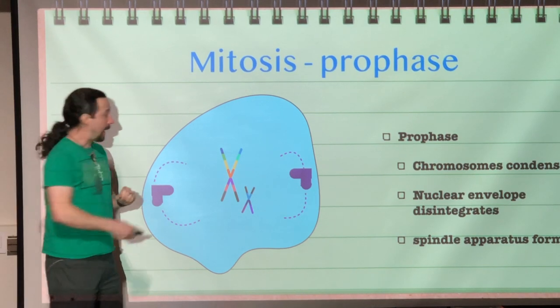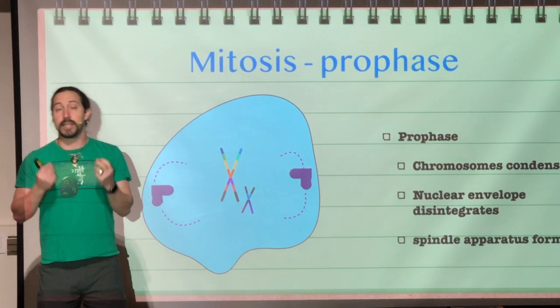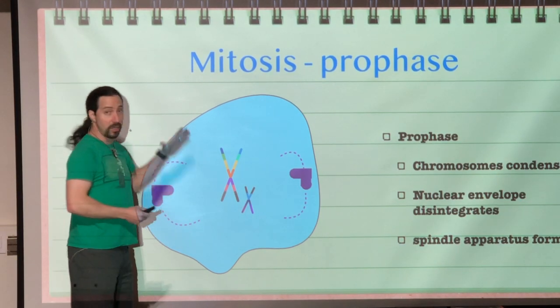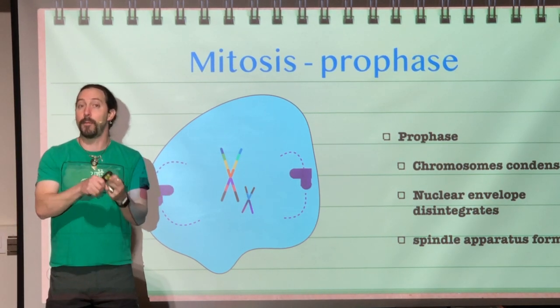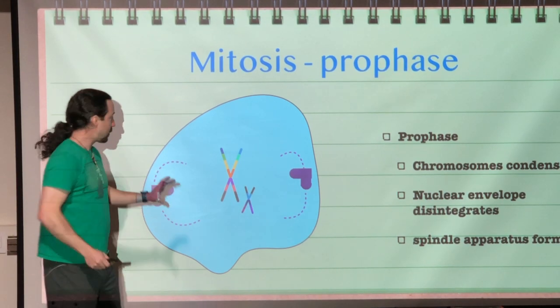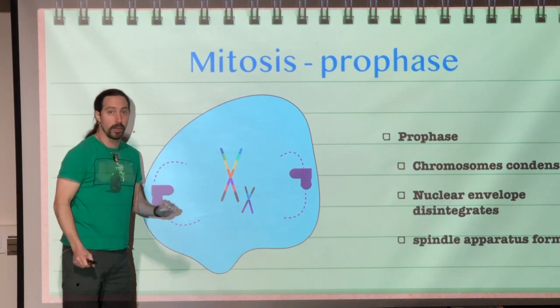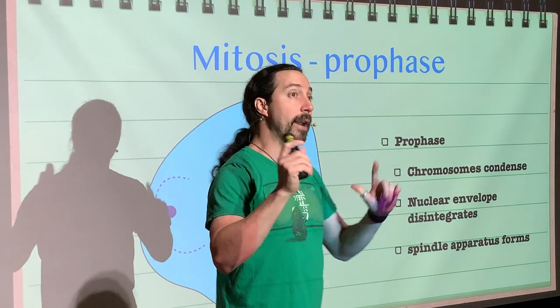For animal cells, they have structures called centrioles. The centrioles control the mitotic spindle. Also, some textbooks will tell you about another phase between prophase and metaphase called prometaphase — that is when the mitotic spindle attaches to the centromere of each chromosome. But for our purposes, we aren't going to include that stage as an actual phase; we are only going to go from prophase directly to metaphase.